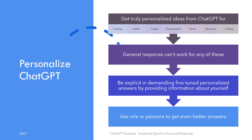Audience-specific response is such a broad topic, it is hard to exemplify in a few words. You can get personalized ideas for cooking, health, career, transportation, travel, education, and coding. But as you can see, all of these things require some level of personalization — otherwise, general purpose responses won't make sense. You need to be really explicit and demand answers that are finely tuned to a specific level and purpose, and that too in plain English.